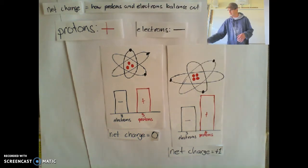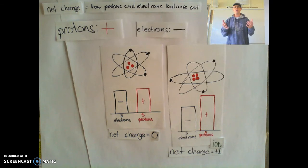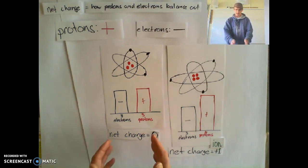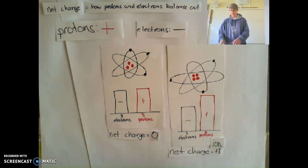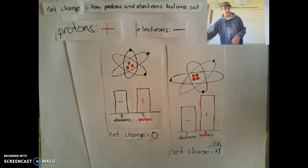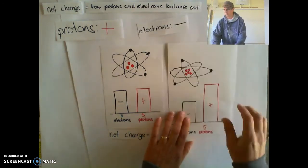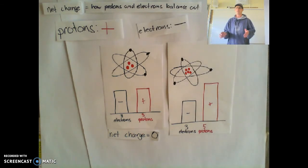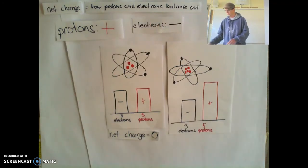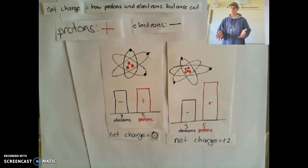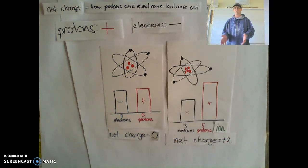Since the atom has a net charge, we give it a special name — we call it an ion. Any atom that has a net charge, that's not neutral, we call it an ion. Now what would happen if I had five protons and three electrons? I've got two more protons, so five pluses and three minuses leaves me with two plus, which means I have a net charge of plus two. And again, we call this an ion. It doesn't matter whether the net charge is a plus or a minus — we call that an ion.